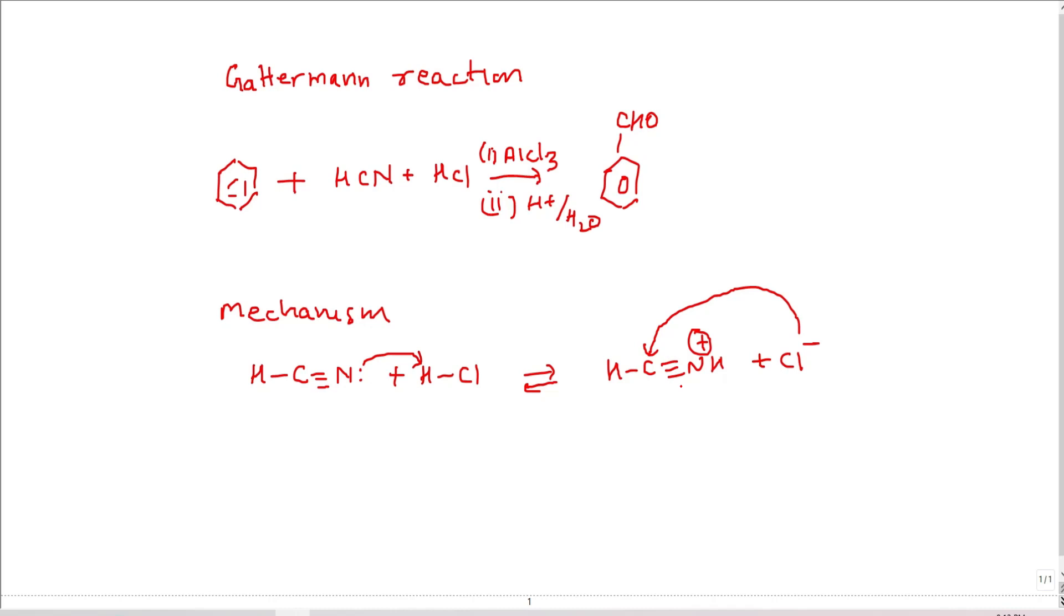Cl minus can attack electrophilic carbon, which is electrophilic in nature to produce an addition compound. When Cl minus attacks carbon, the electrons of the triple bond shift to nitrogen converting it into a neutral molecule. This is how HCl adds to HCN. Now you can see that there is a double bond between carbon and nitrogen because HCl added to the triple bond.